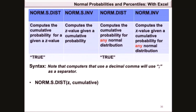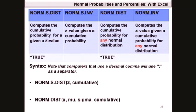norm.s.dist requires the z value of interest and the cumulative statement, which will be TRUE. norm.dist requires the x value, the mean, the population standard deviation, and the cumulative statement, which will also be TRUE.